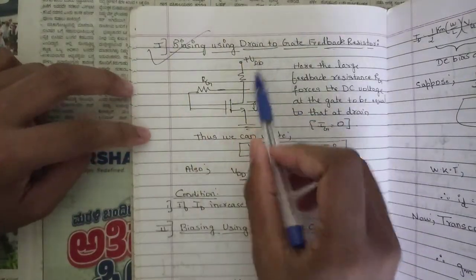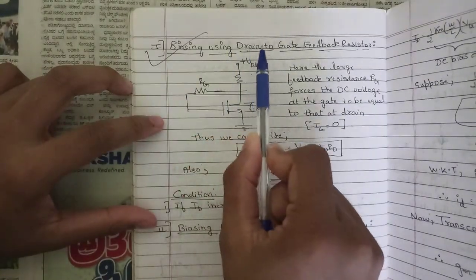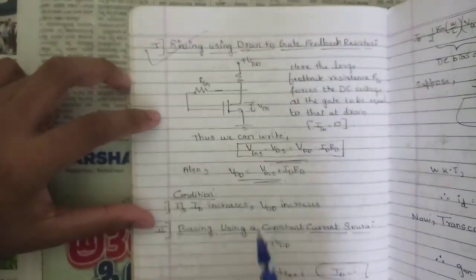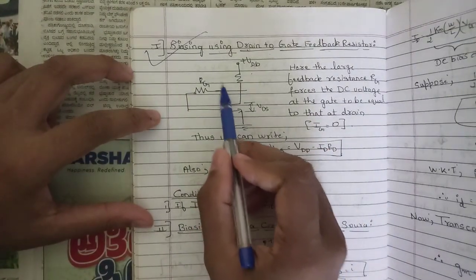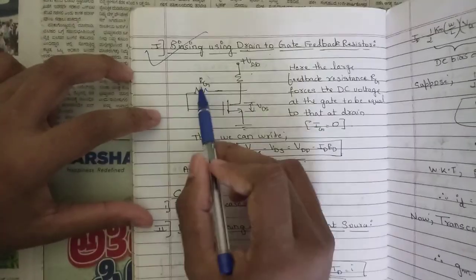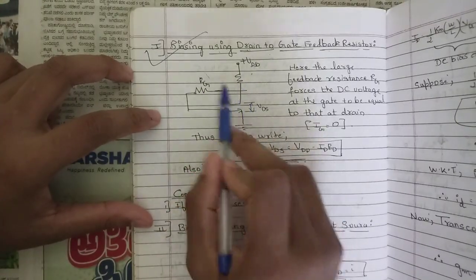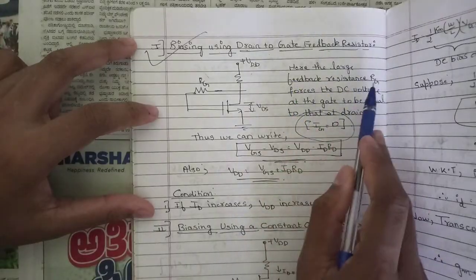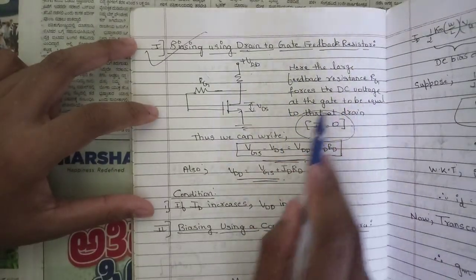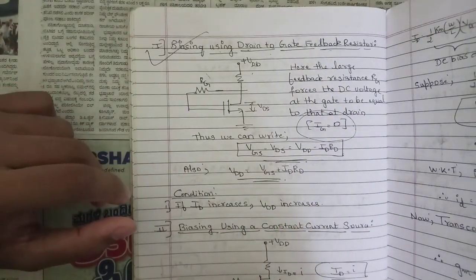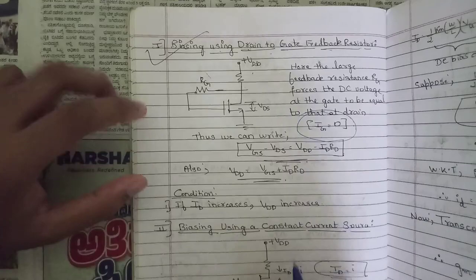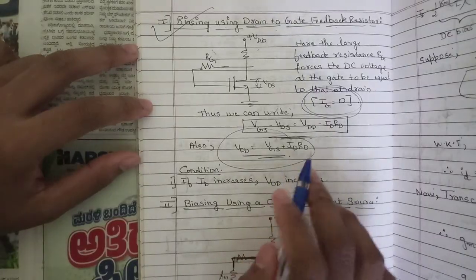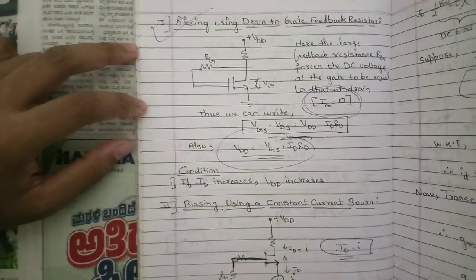For biasing using the drain-to-gate feedback resistor: from the drain terminal, we take a gate resistance and short it towards the drain terminal, so the drain-to-gate feedback resistor is nullified and the gate current equals zero. The large feedback resistance RG forces the DC voltage at the gate to equal that of the drain, so drain voltage and gate voltage are approximately equal. The key relation is: VDD = VGS + ID × RD.